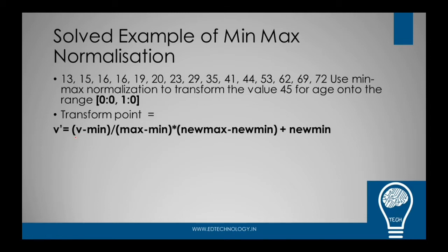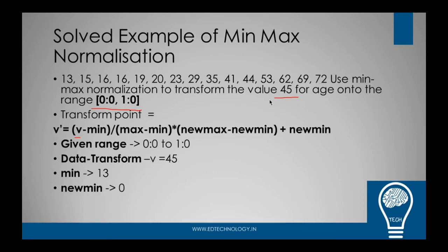Throughout the question, whatever values we have, we will be listing it out here. So the given range is 0 to 1. Data which we want to transform v equals 45. Min value which we require is 13. We also require max which is 72. New_min is 0 and new_max is 1.